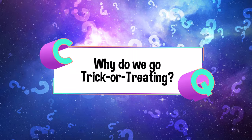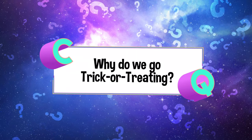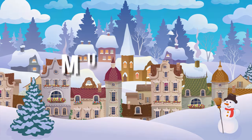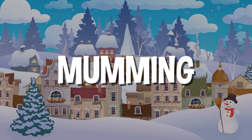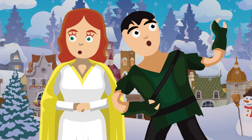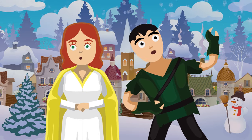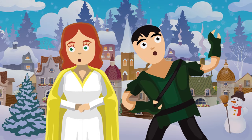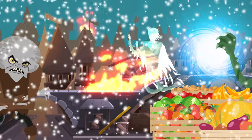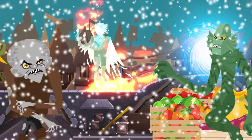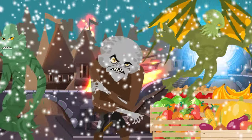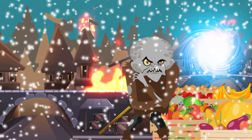Why do we go trick-or-treating on Halloween? Since at least medieval times, there's been a tradition of mumming on holidays like Christmas or Easter. Mumming is when you go door-to-door in costume, performing short skits or plays in exchange for food or drink. The mumming tradition likely spread to the Halloween season because of an old Celtic festival called Samhain.